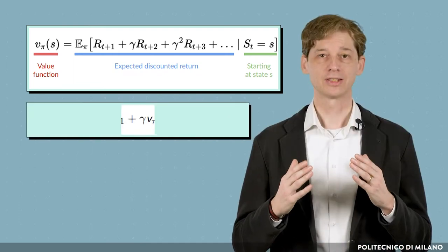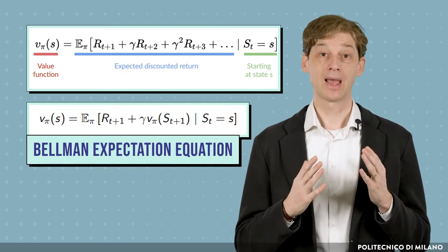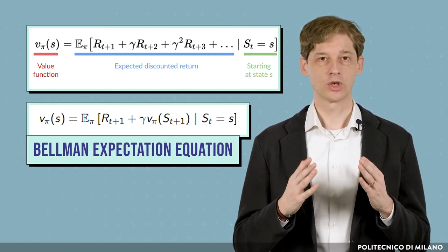The value of a state s, using policy π, can be expressed by a recursive equation known as Bellman Expectation Equation. According to this equation,